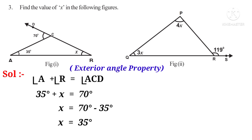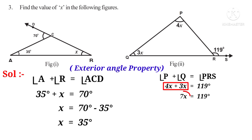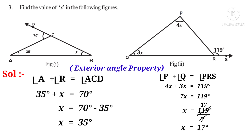In the second figure, angle P plus angle Q equals exterior angle PRS. Angle P is 4X, angle Q is 3X, and exterior angle PRS is 119 degrees. So, 7X equals 119 degrees, because 4X plus 3X gives 7X. Therefore, X equals 119 divided by 7, which simplifies to 17. So, the value of X is 17 degrees.